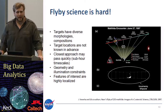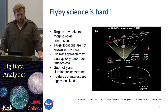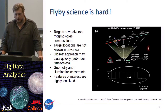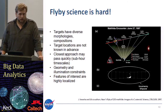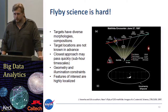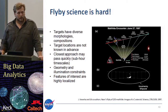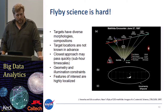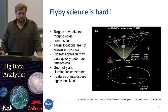Flyby science in general is difficult. Nowadays, a lot of space probes flyby asteroids or comets on their way to their primary goal. For example, the Juno mission or Deep Space mission flew by asteroids, and during a flyby, there's a very limited amount of time to take pictures and measurements from these highly interesting objects.